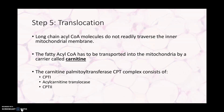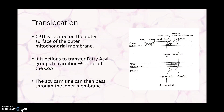This carnitine enzyme complex, which we'll abbreviate to CPT complex, consists of three different parts: CPT1, acyl-carnitine translocase, and CPT2. CPT1 is located on the outer surface of the outer mitochondrial membrane. It functions to transfer fatty acyl groups to carnitine itself.